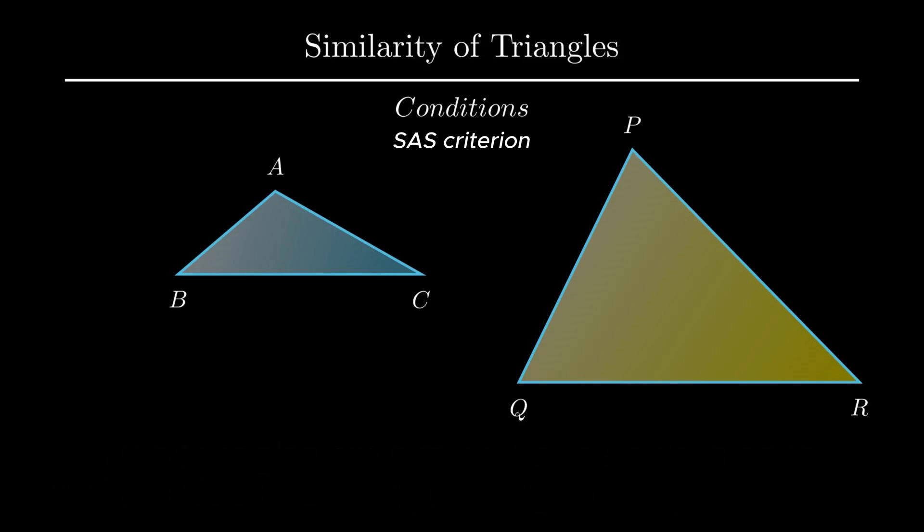Consider two triangles ABC and triangle PQR such that side AB measures 2 units and AC measures 4 units, while side PQ measures 4 units and PR measures 8 units. The angles formed between these two sides are angle A and angle P, measuring 50 degree. So, taking the ratio of the corresponding sides, we get side AB ratio side PQ equals side AC ratio side PR, which is simplified as half. Angle A equals angle P, which is 50 degree. Thus, by SAS rule, triangle ABC is similar to triangle PQR.